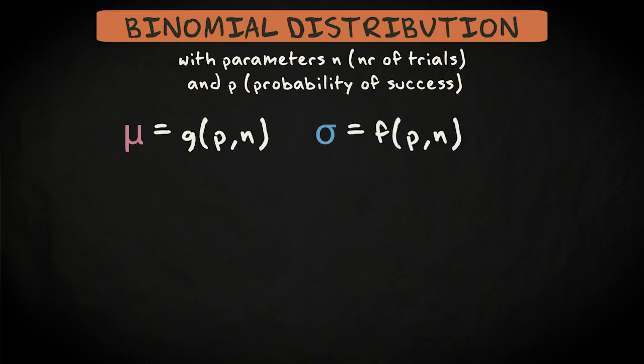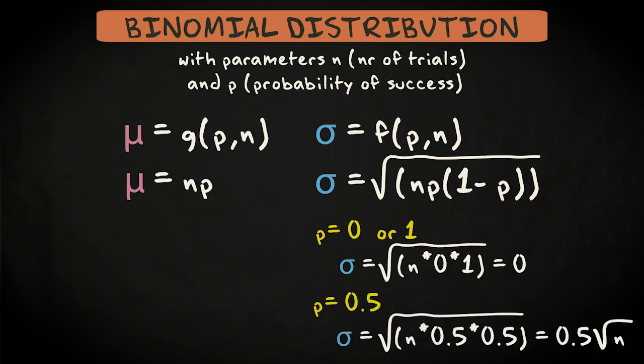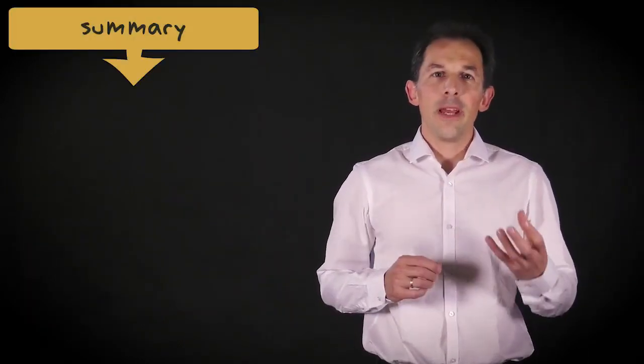Its standard deviation depends on the value of p. And so does its mean, as a matter of fact. The mean of a binomial distribution is equal to n times p. And its standard deviation is equal to the square root of n times p times 1 minus p. For p is 0 or 1, the standard deviation is 0. And for p is a half, it reaches a maximum of 0.5 times the square root of n.